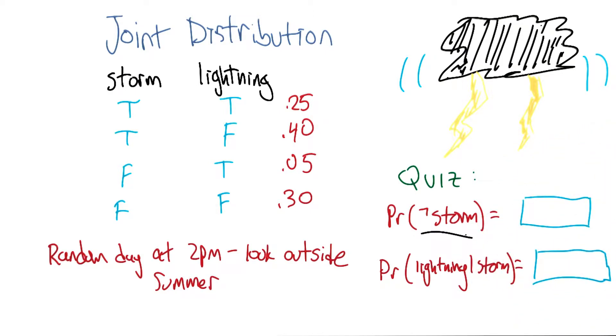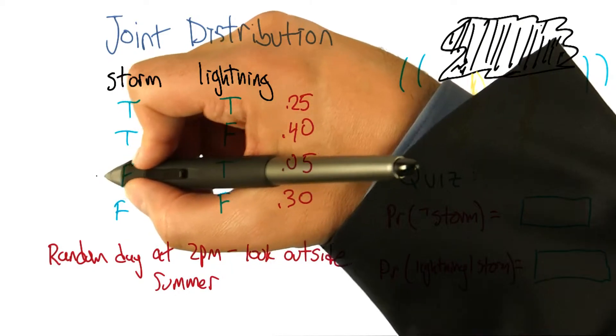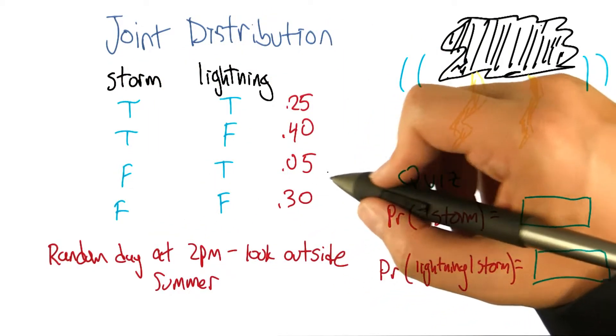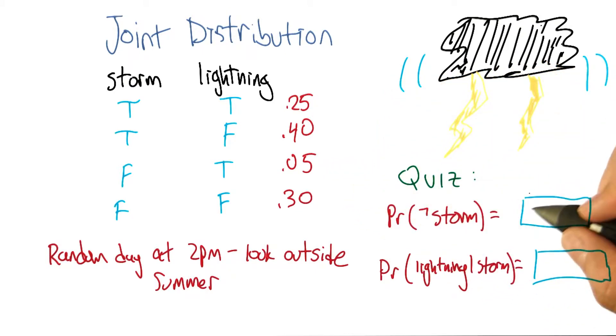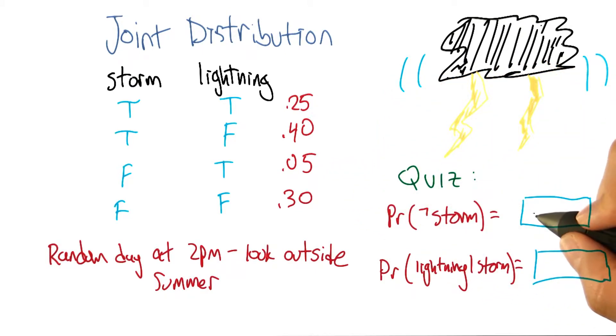So what's the probability that there isn't a storm? Well, the way you have this drawn, it actually makes it pretty easy to see. I can just look at the cases where storm is false. And it turns out there's two of them. And I can just add up those probabilities over there, and I get 0.05 plus 0.30, and that gives me 0.35.